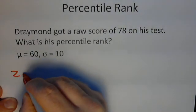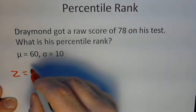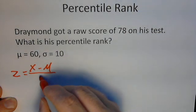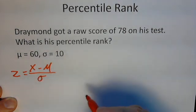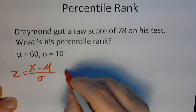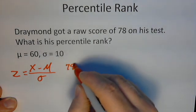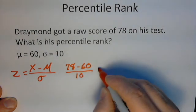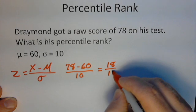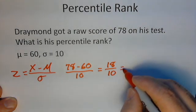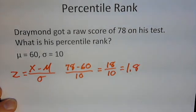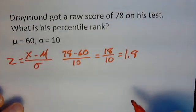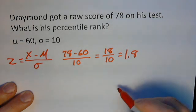We're going to figure out his z-score first. Remember, the z-score formula is: the score minus the population mean, divided by the population standard deviation. In this case, his score is 78 minus 60, divided by 10, which equals 18 divided by 10, which equals 1.8. So he has a z-score of 1.8, and we're trying to figure out what percentage of people scored below what he did.